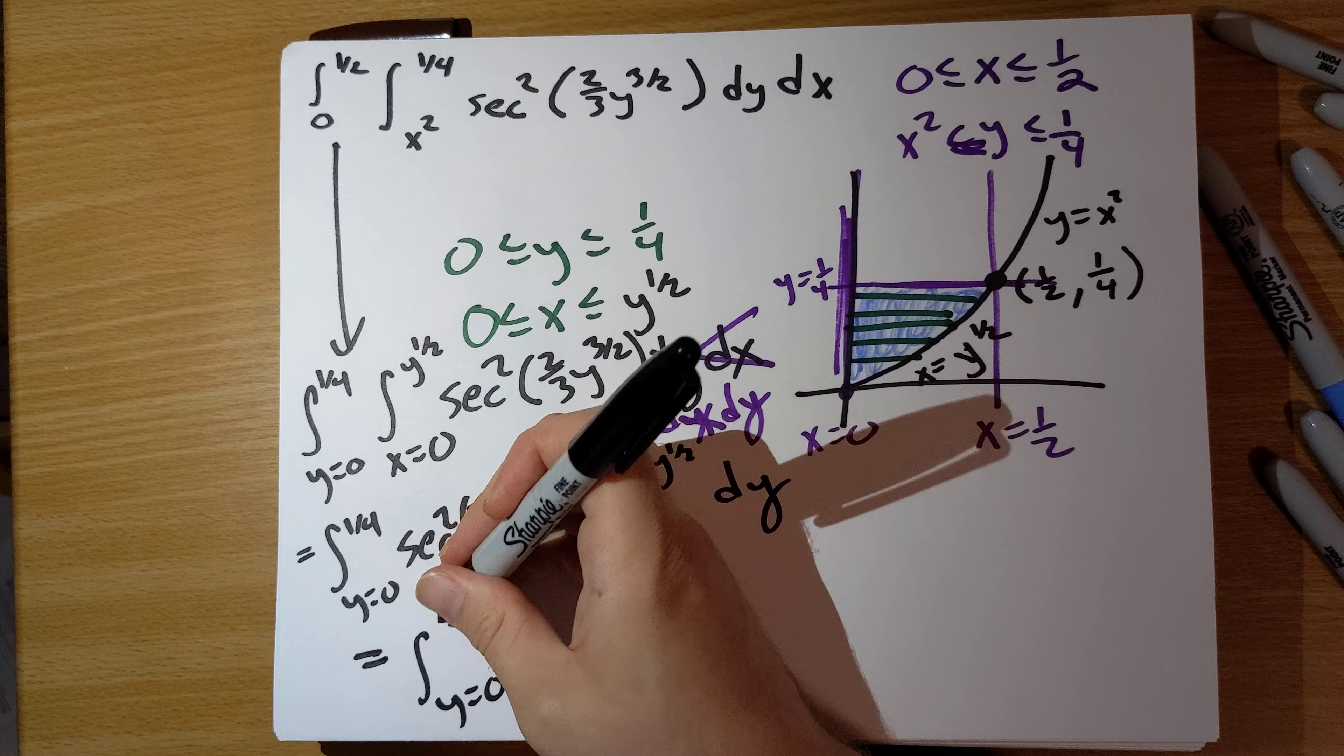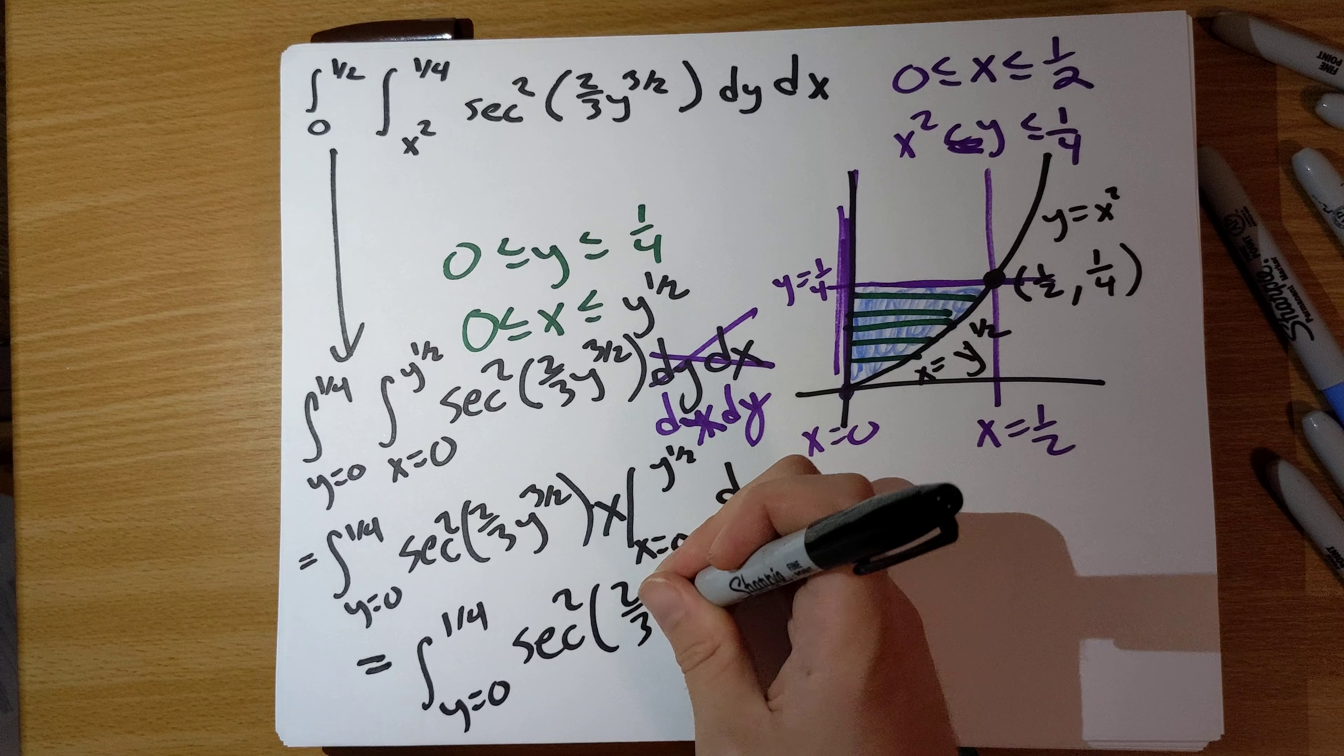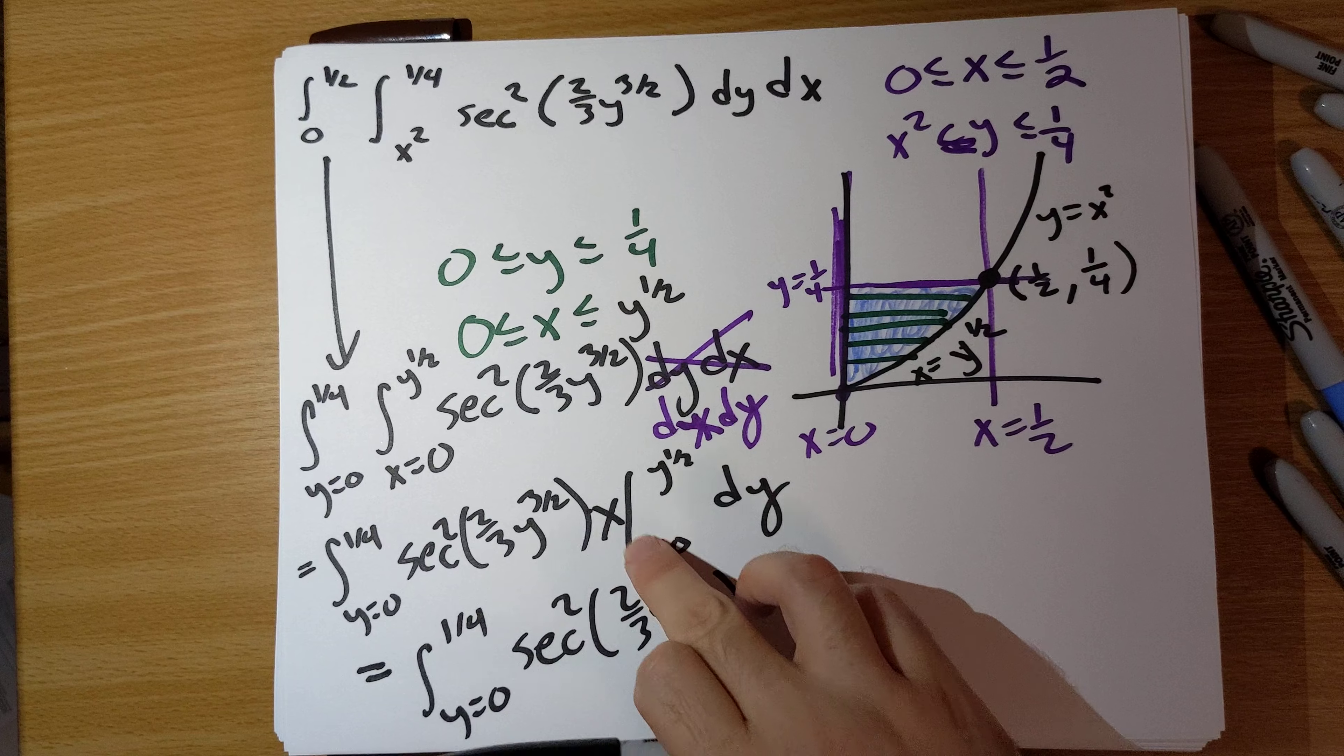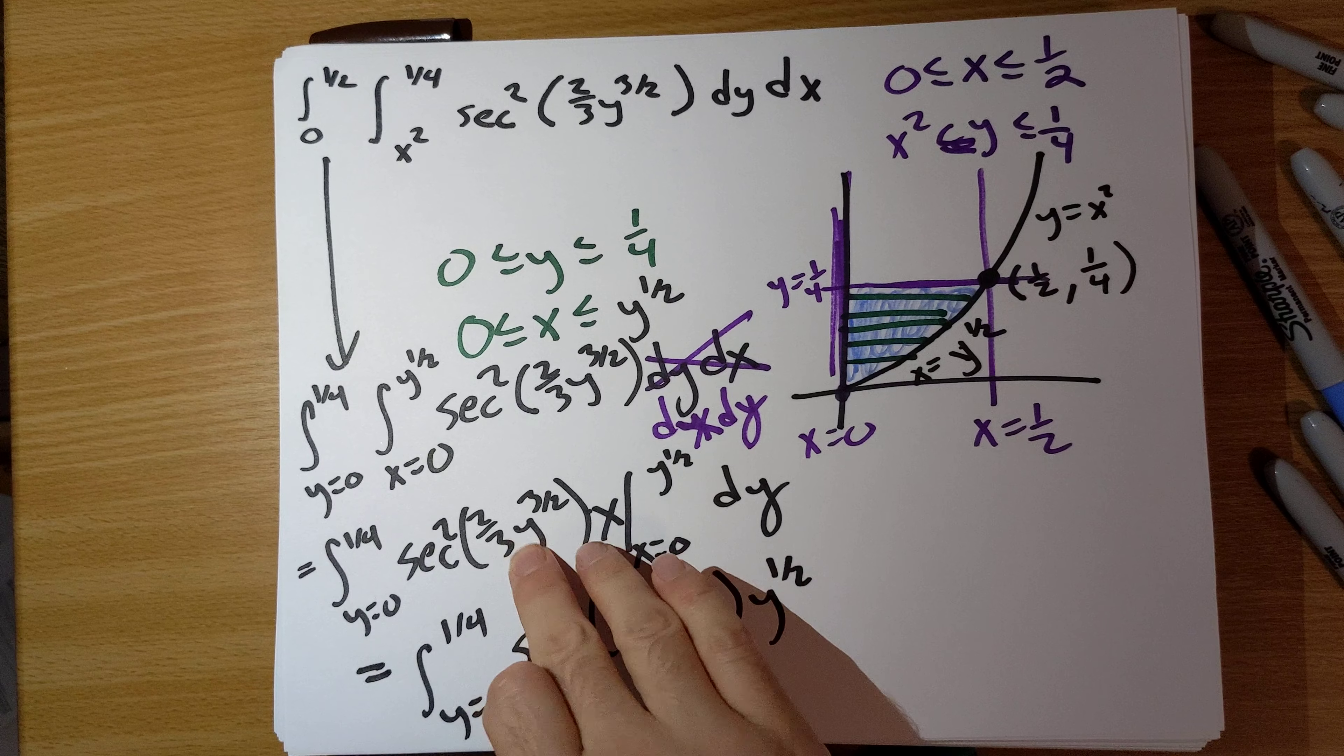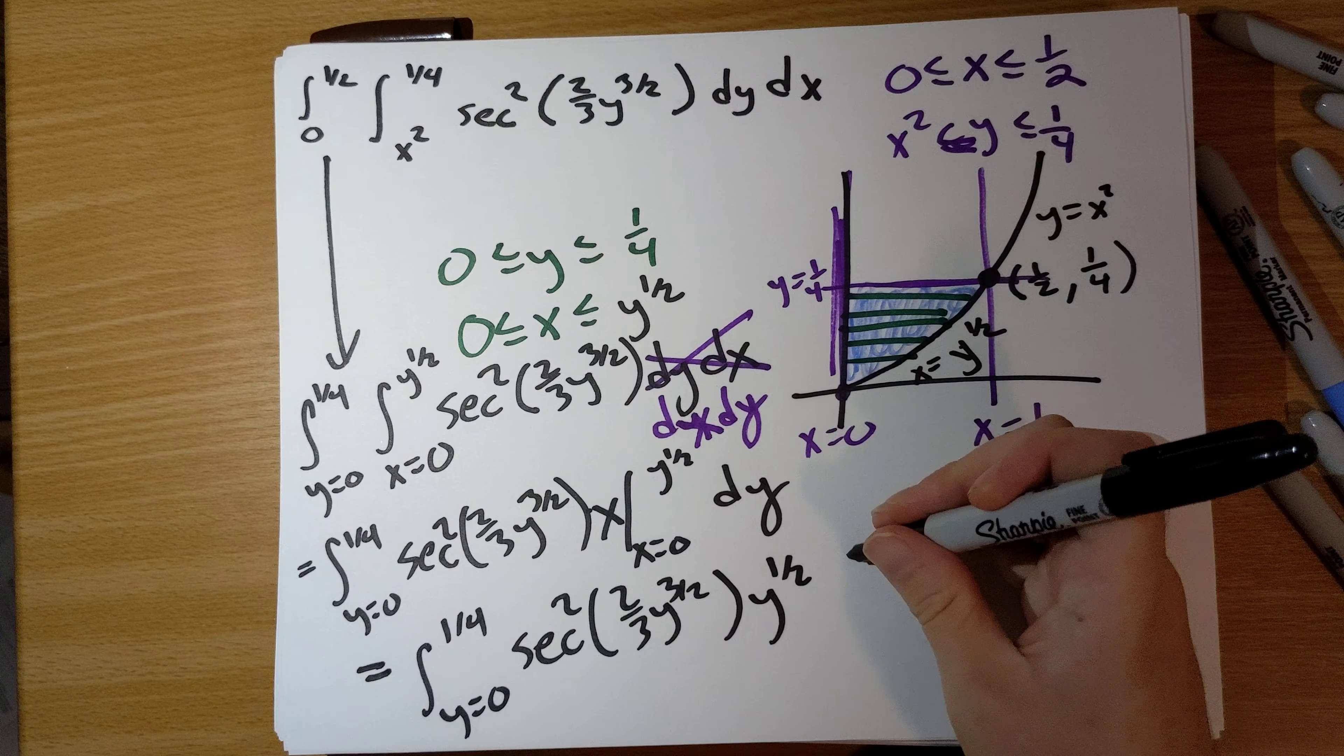So y runs from 0 to 1/4, secant squared 2/3 of y to the 3/2. Plug in x is square root y, and then subtract the expression we get when we plug in x equals 0, but this will just give us 0, so we can drop that term.